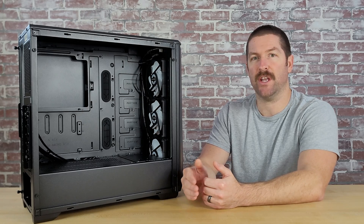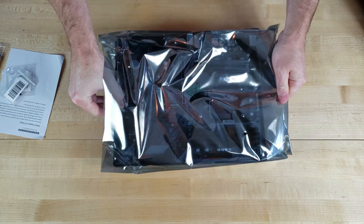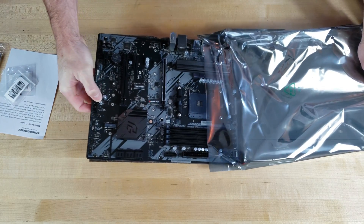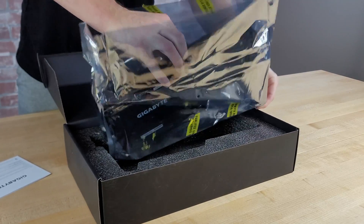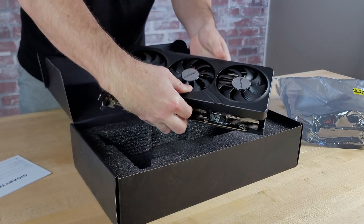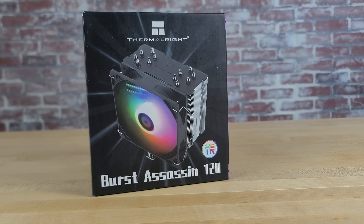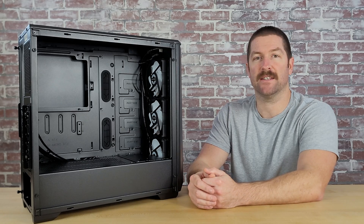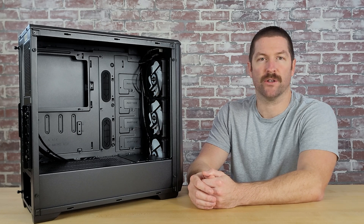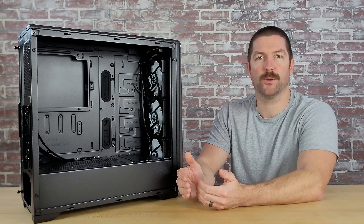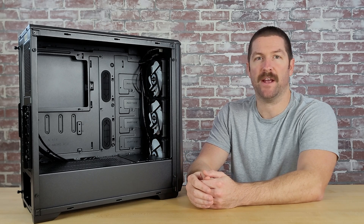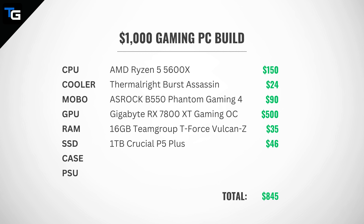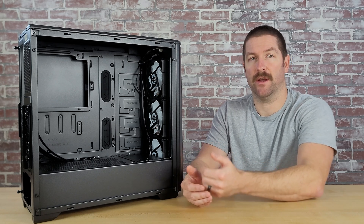We also have to take into consideration the other components we've chosen. We've chosen a standard ATX motherboard, so that will eliminate all micro ATX and mini ATX case options. We've also chosen a Gigabyte RX 7800 XT graphics card that measures in at 302 millimeters long, and we've picked Thermalright's Burst Assassin CPU cooler, which measures in at 154 millimeters tall. So we need to find a case that can meet that criteria. We also want a case that has a mesh or grilled front panel, and we'd prefer to get something that comes with multiple fans pre-installed. If we can get RGB fans from the get-go, that would be even better. We've already made our case decision — it's right here, obviously.